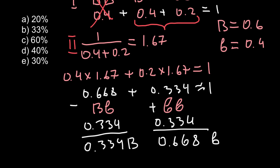Because the answers are given in percentage form, we multiply by 100. The new frequency of the dominant allele is 33.4%, and the new frequency of the recessive allele is 66.8%.